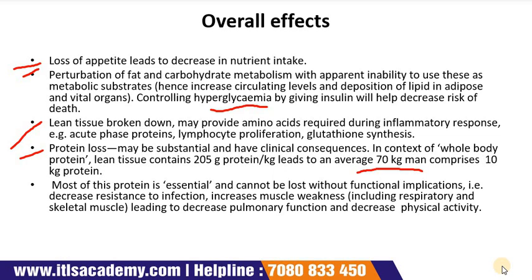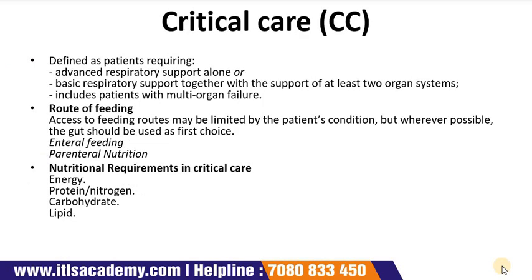Increased muscle weakness includes respiratory and skeletal muscle weakness, leading to decreased pulmonary function and decreased physical activity. There also occurs the effect of starvation. Although there are some similarities between the metabolic response to injury and starvation — both lead to depletion — there are important differences.